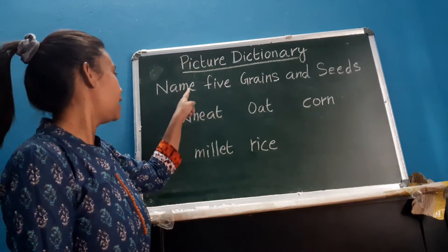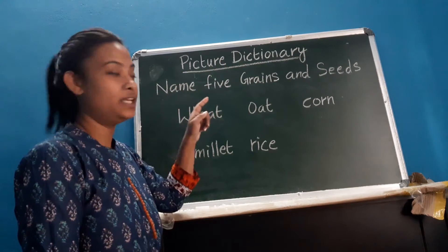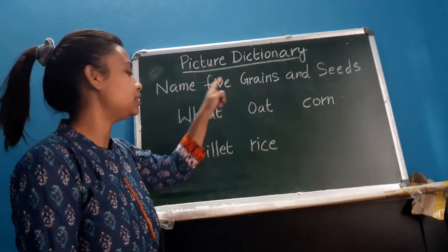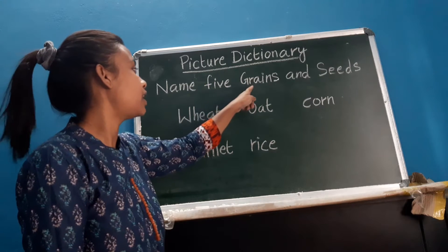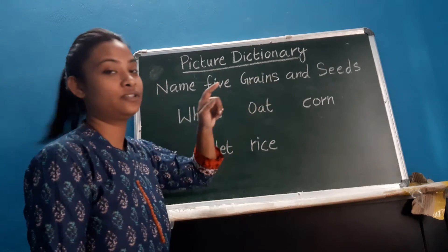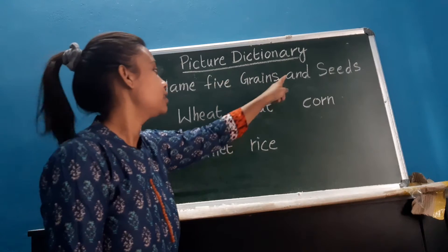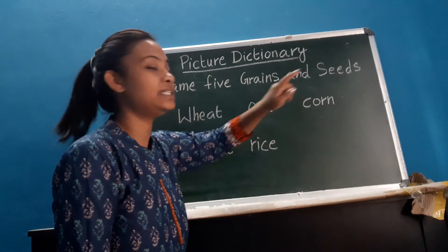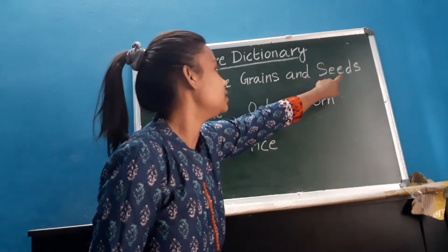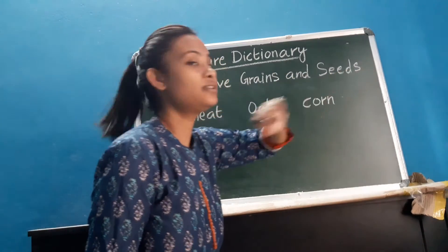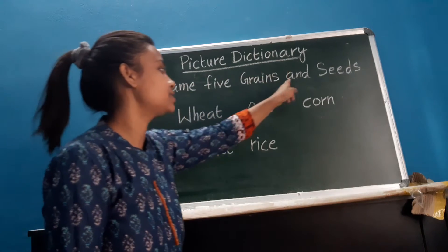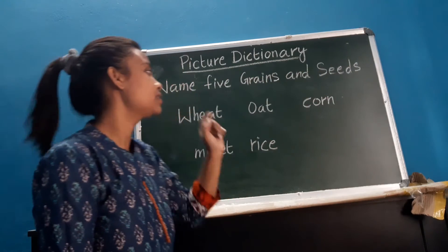N-A-M-E, name. F-I-V-E, five. G-R-A-I-N-S, grains. A-N-D, and. S-E-E-D-S, seeds. Name 5 grains and seeds.